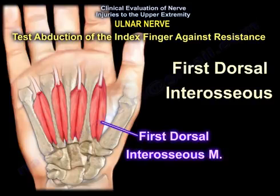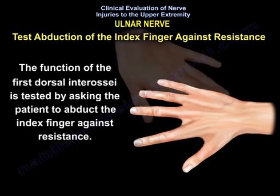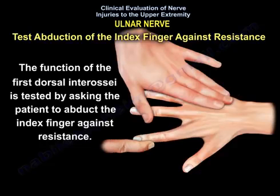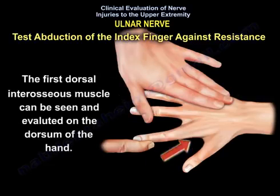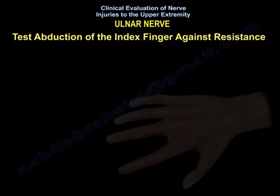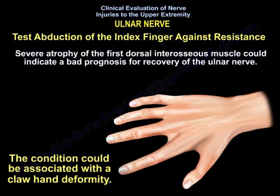Testing the first dorsal interosseous: its function can be seen and evaluated on the dorsum of the hand. Severe atrophy of the first dorsal interosseous muscle could indicate a bad prognosis for recovery of the ulnar nerve.